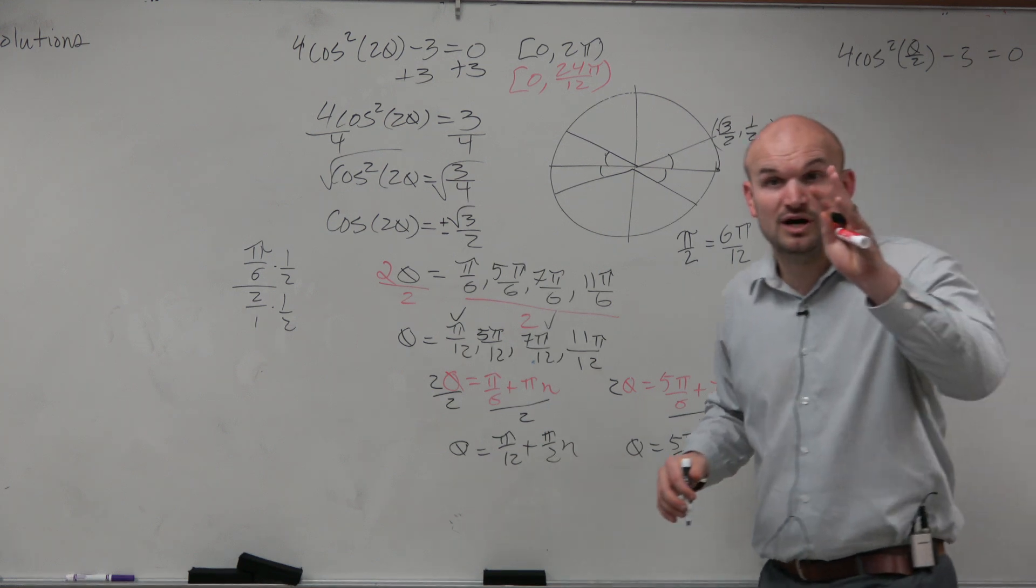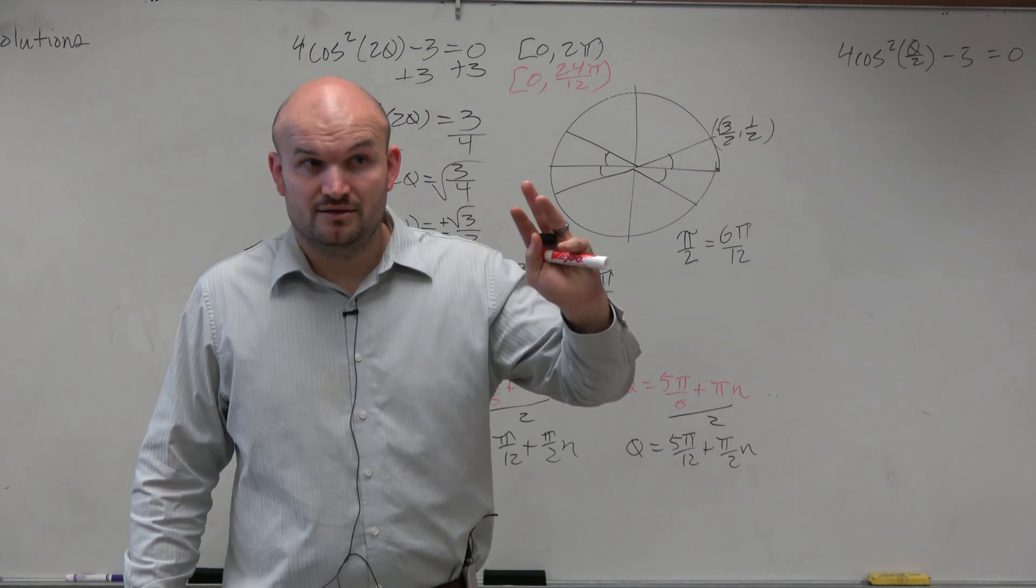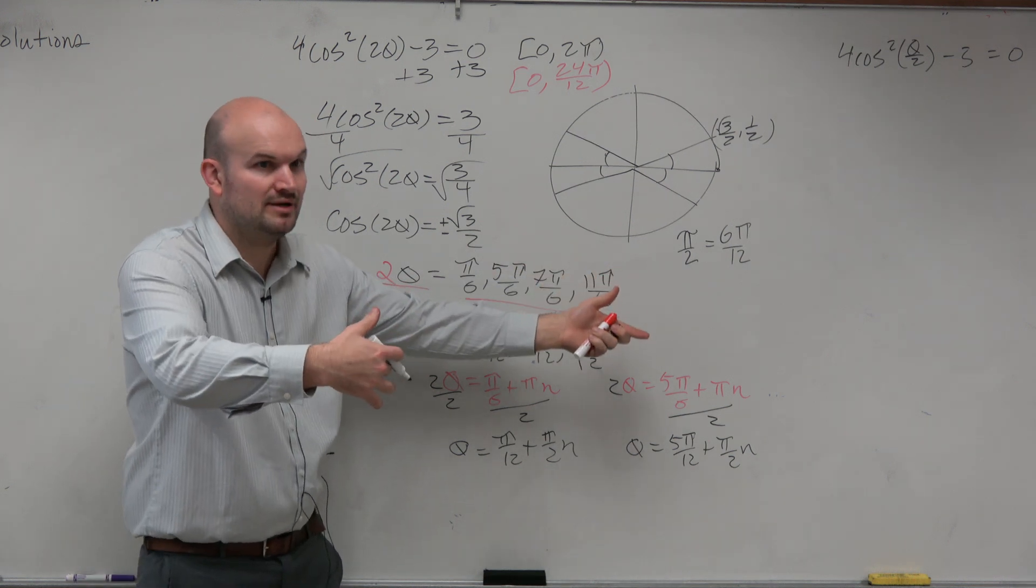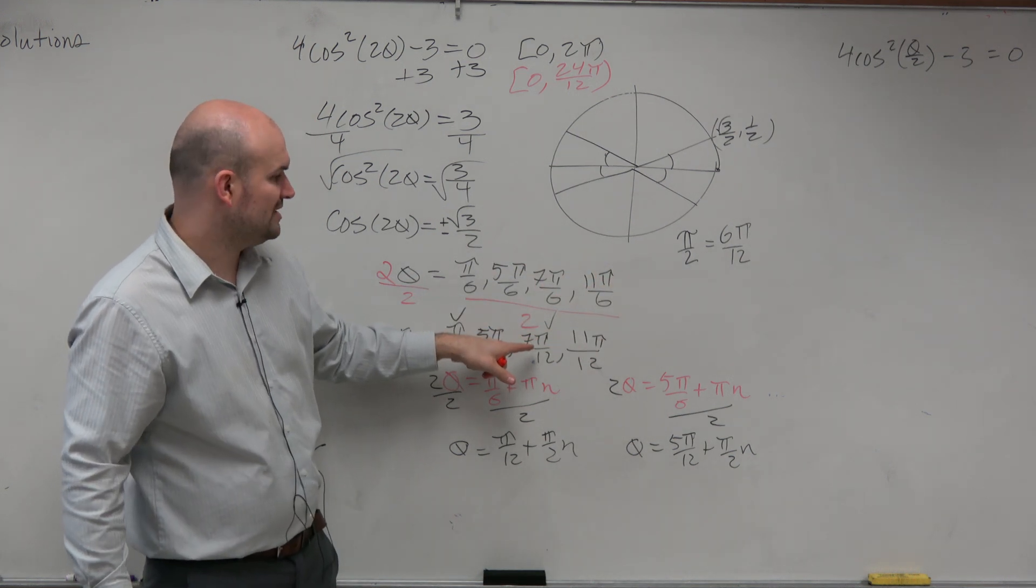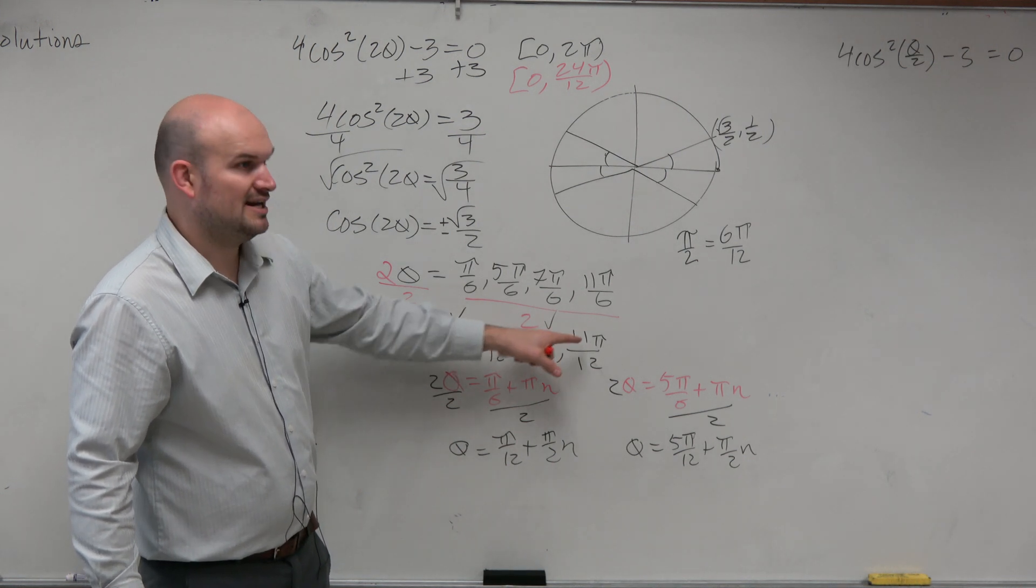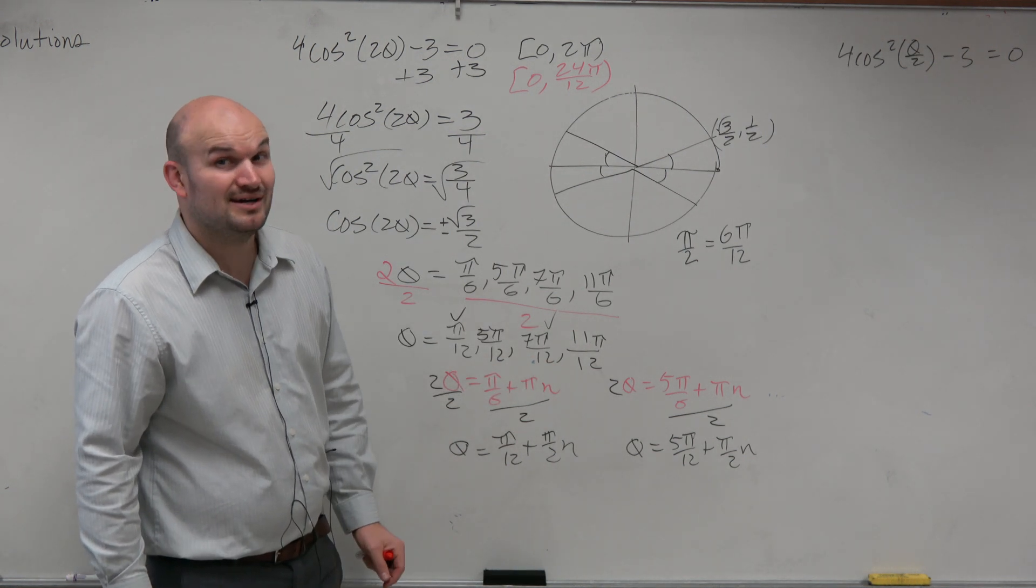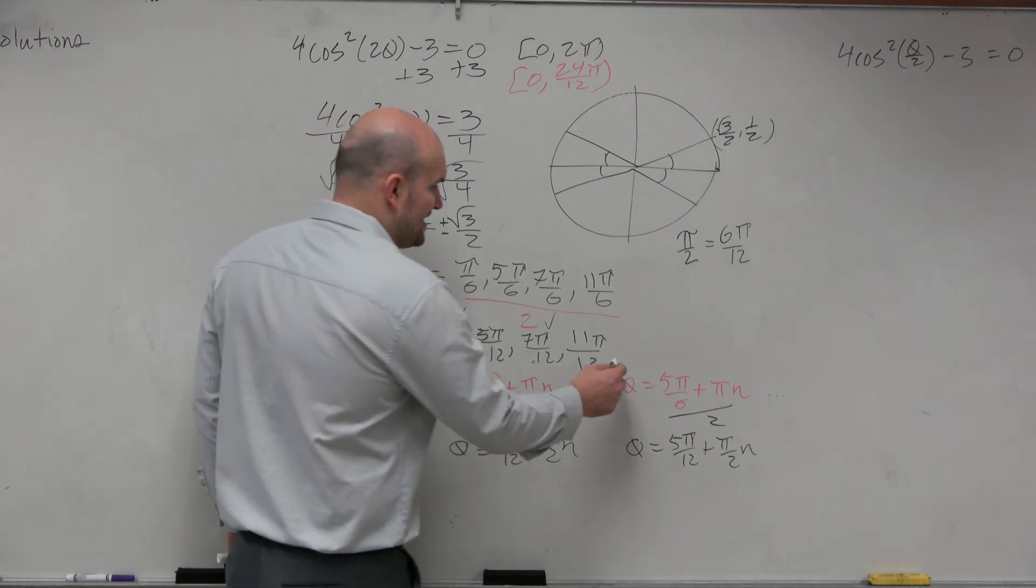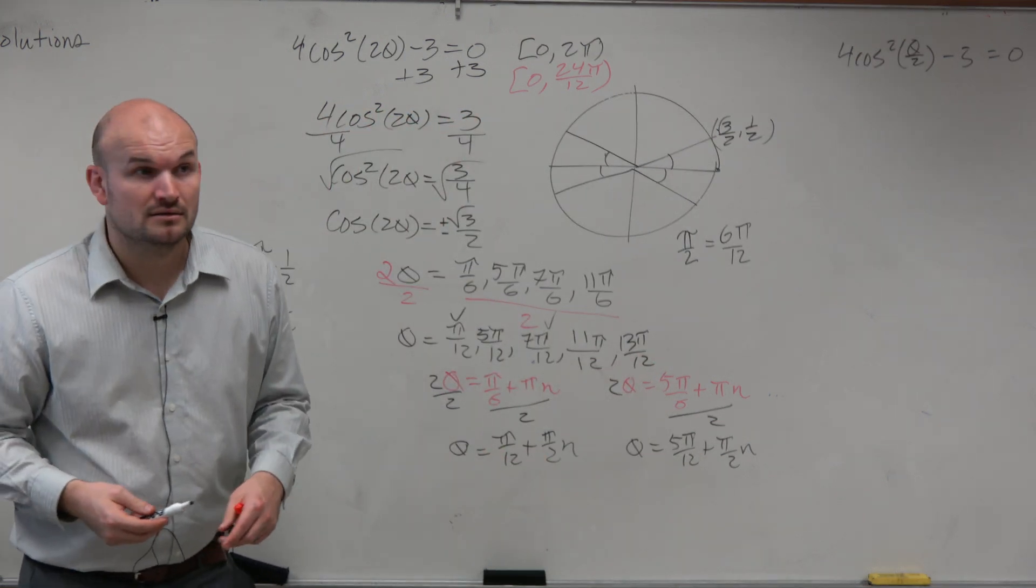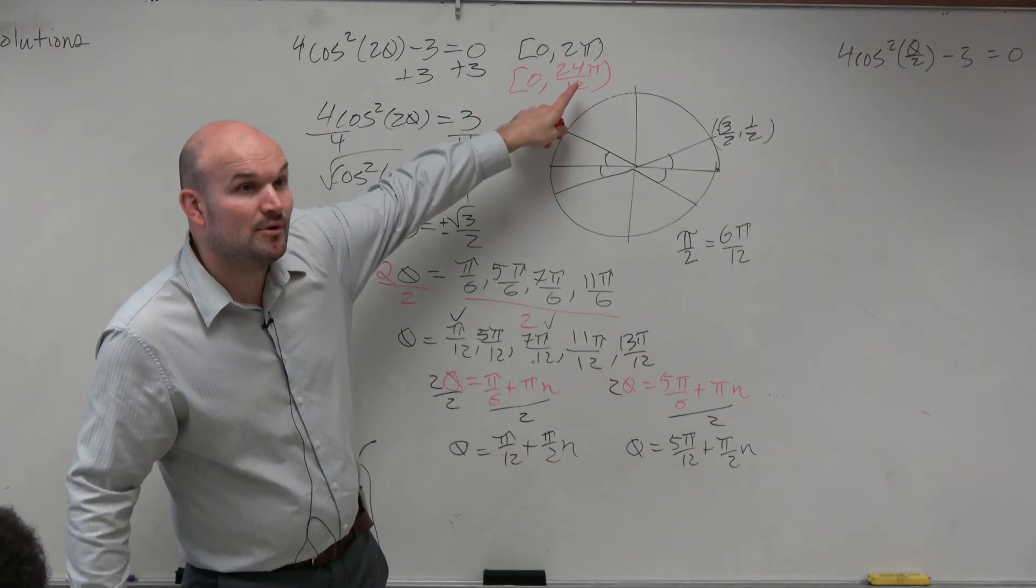Could we do it again? What if n was 3? Basically, could we just add 6 pi over that? What's 6 pi over 12 plus 7 pi over 12? 13 pi over 12. Is that an answer choice? No, but guess what? It is a solution. So you have to add that. 13 pi over 12. Could we do it again? Yeah, we can go all the way up to 24 pi, because that's 2 pi.